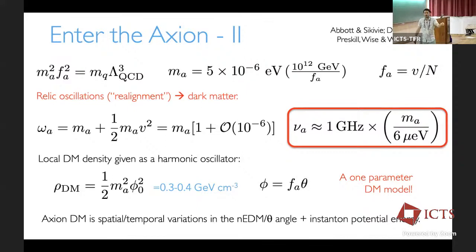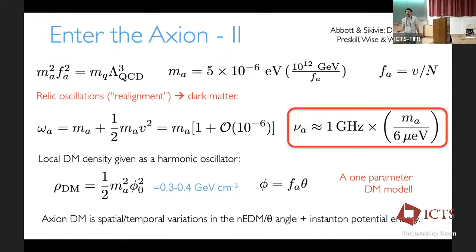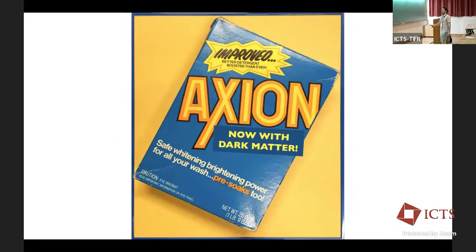The location of the minimum doesn't affect the mass. The fact that the minimum is at zero, solving the strong CP problem, is the Vafa-Witten theorem. Axion dark matter is literally energy stored in spatial and temporal variations of the theta angle of QCD — equivalently, variations of the neutron electric dipole moment — plus potential energy from the instantons of QCD. It's not a collection of massive cold particles. Quite bizarre, but it comes with added dark matter as a bonus.